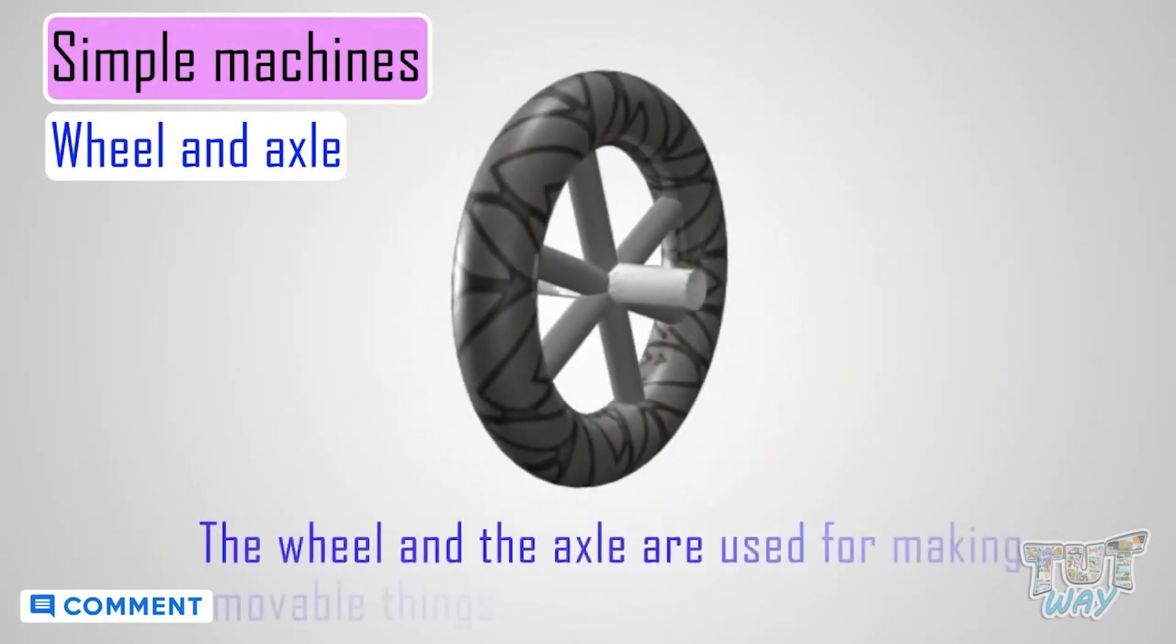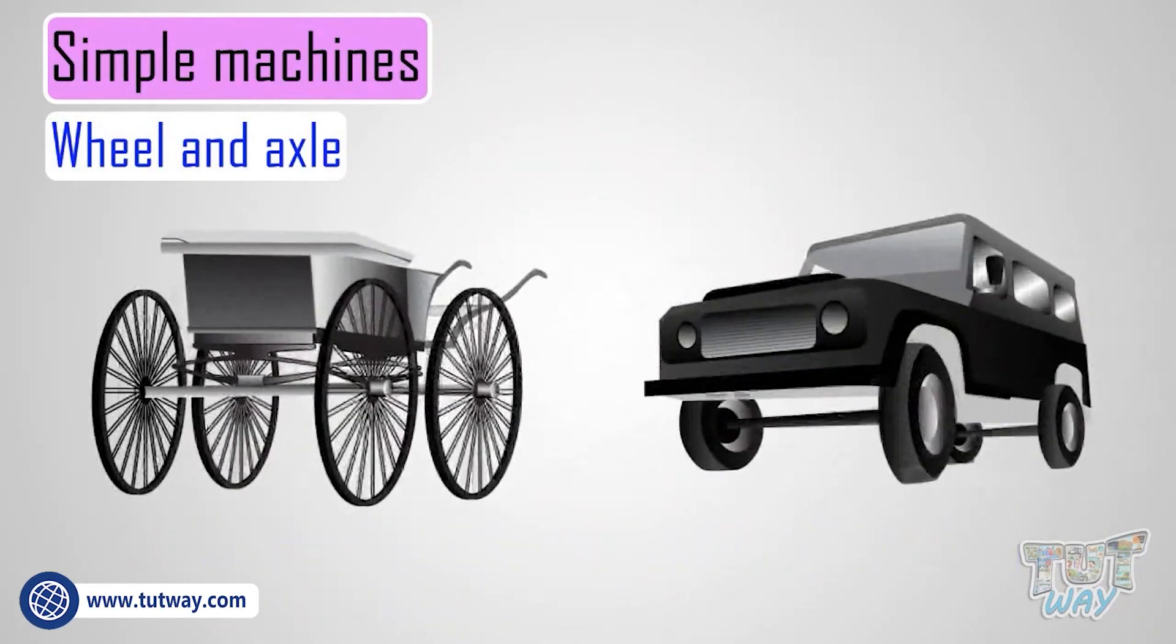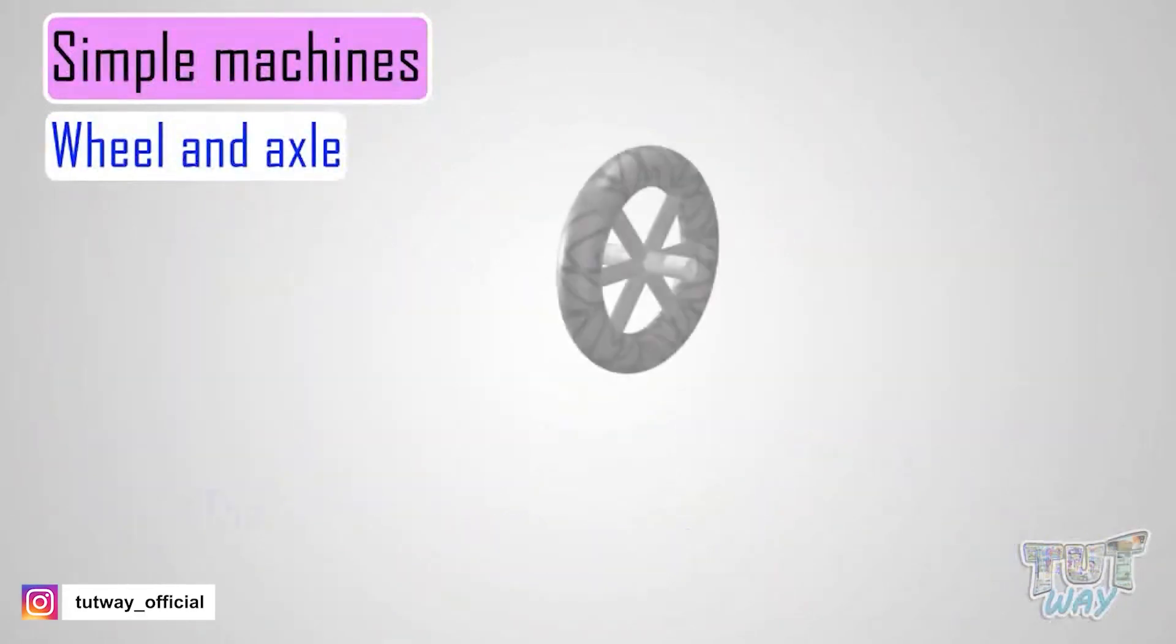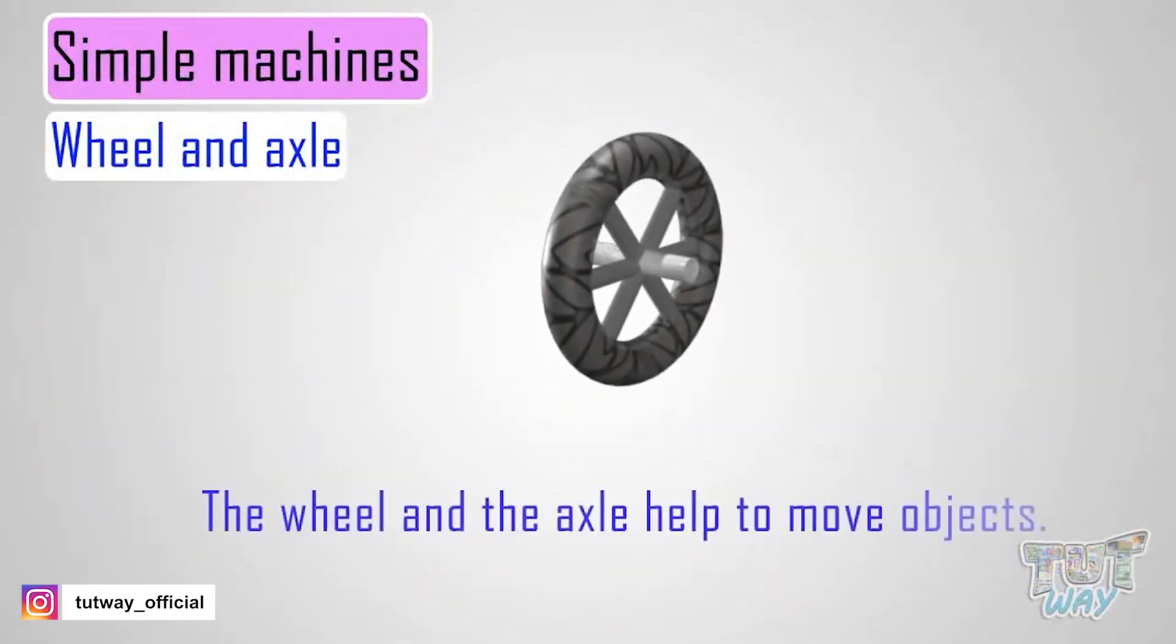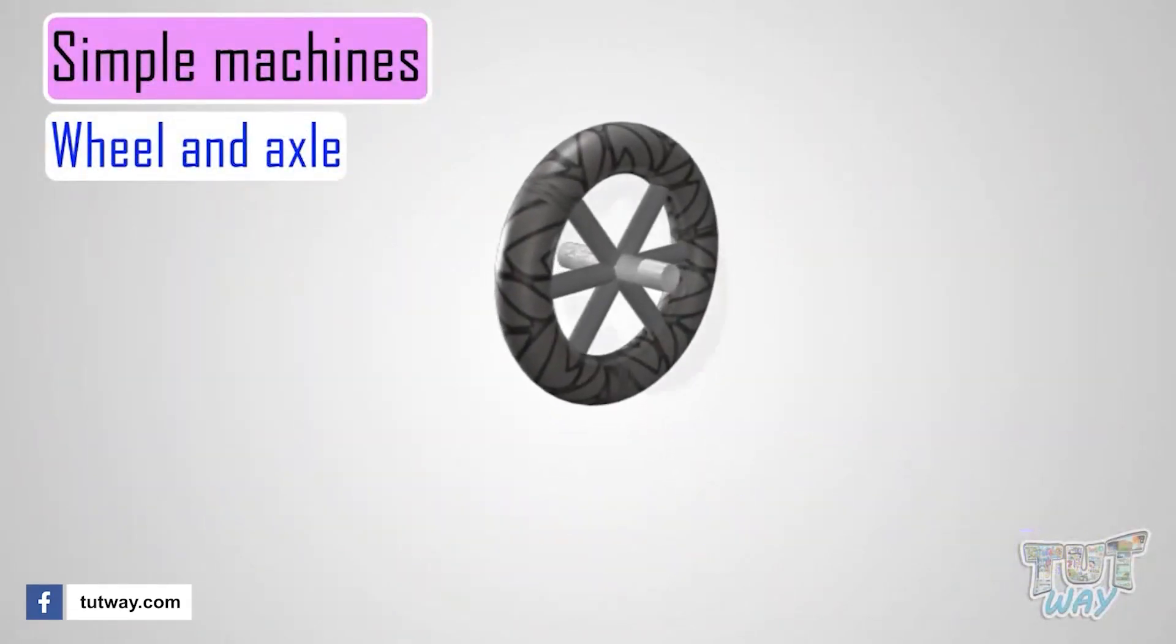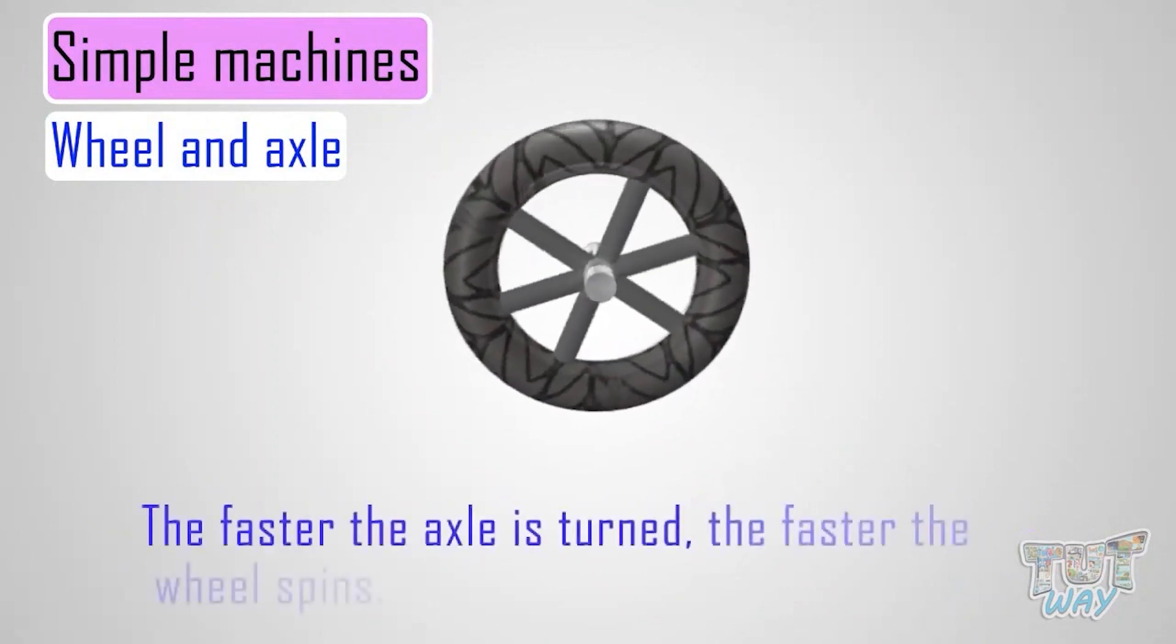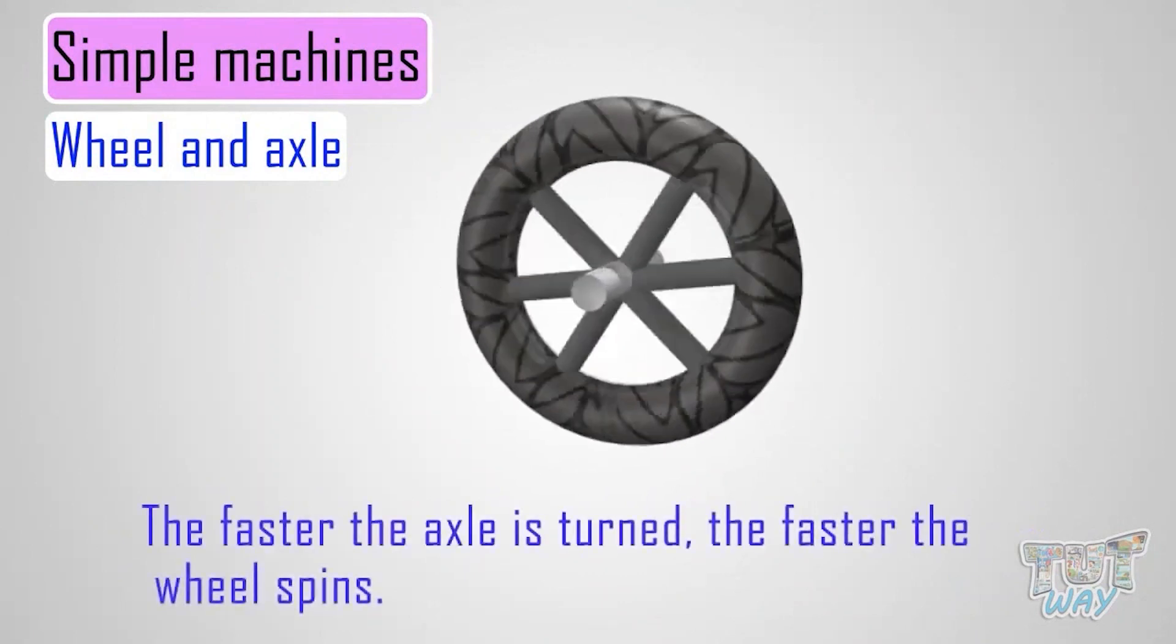The wheel and axle are used for making moving things. All vehicles are made using the wheel and axle. A wheel and axle helps to move objects. The faster the axle is turned, the faster the wheel spins.